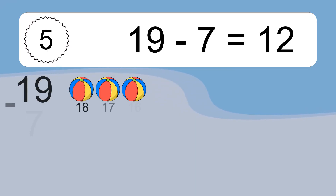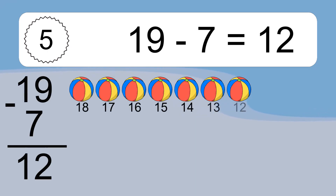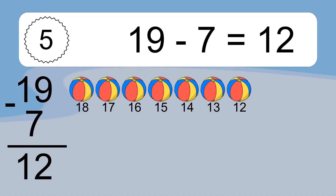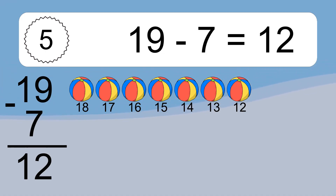19 minus 7 equals what? 19 minus 7 equals 12. Let's count it. 18, 17, 16, 15, 14, 13, 12.